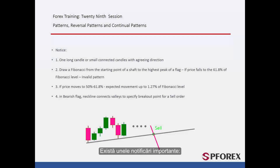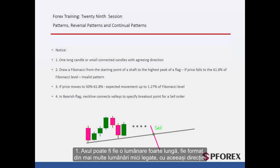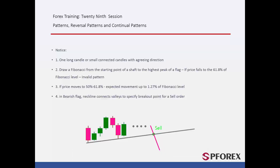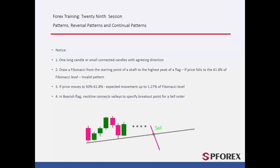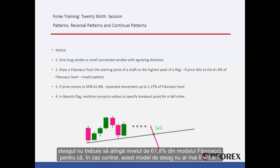There are some important notifications. The shaft can either be a very long candle or consist of multiple connected small candles with the same direction. If a trader draws a Fibonacci pattern on the shaft, the flag must not reach the 61.8% level of the Fibonacci pattern — otherwise, this flag would not be valid anymore.